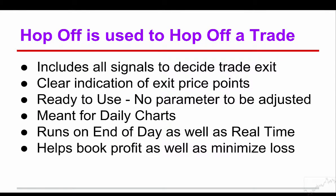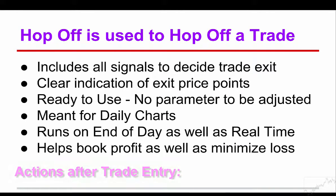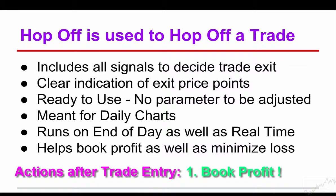If you have seen our tutorial on the Hop On template, you know we use the Hop On template to enter our trades. Once we have entered a trade, we have several distinct possible actions to take. One is to take money off the table when we have profit, without hoping that every trade will keep moving in our direction forever. This initial profit may be booked on a partial position, say half of the position. The second possibility is to let profit run on the remaining position, so that we can benefit from those occasional long hauls that our trade may enjoy.